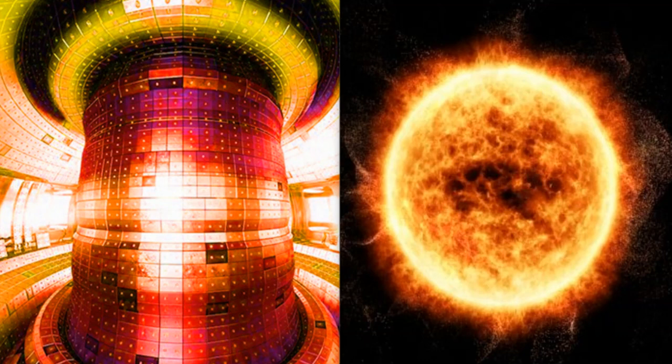This is the HL3 tokamak, and it's pretty much an artificial sun. It uses plasma that they heat to 120 million degrees to create nuclear fusion. And this produces about the same amount of energy that you're going to get out of a star, the average star.